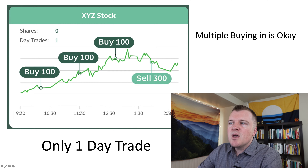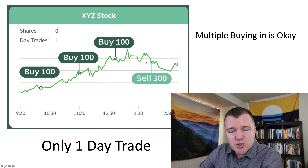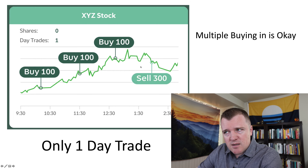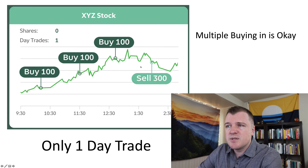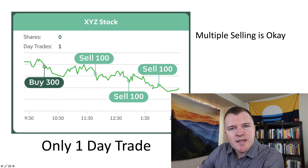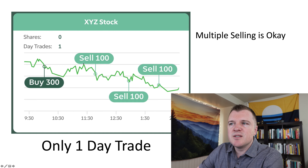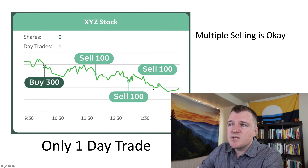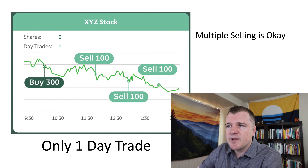Now there are a lot of weird what-ifs in the PDT rule, so let's cover them all. The first one is purchasing multiple orders buying into a stock. For example, if you're day trading and the stock is rising and you're entering different positions as it goes up, then sell them all at the same time — this only counts as one day trade. It's one buy and one sell to close it out within the same calendar day. So multiple buy-ins and then one sell-out doesn't count against you.